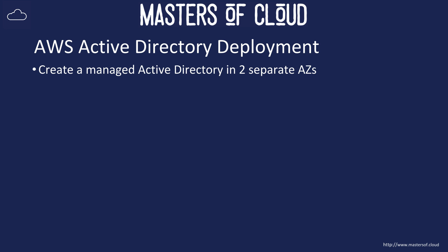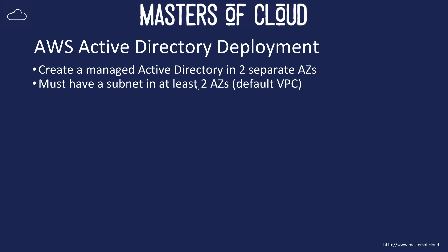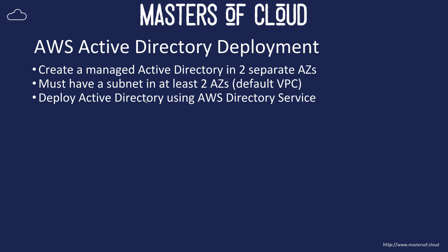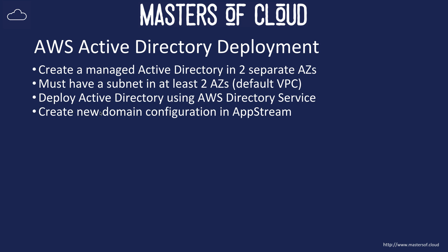AWS manages this Active Directory for you. You need to deploy it into two separate availability zones, which means you need a subnet in two availability zones within your VPC or VPCs. We must have a subnet in at least two availability zones. As part of this demonstration we'll be using the default VPC, so we'll have to add a new subnet. We can deploy Active Directory using the AWS Directory Services.